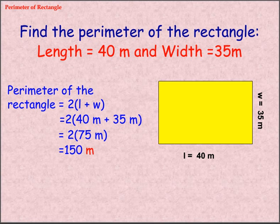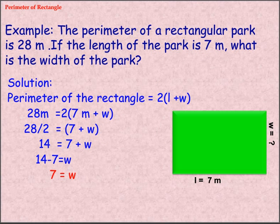Find Perimeter of Rectangle. The perimeter equals 75 meters, so the total perimeter is 150 meters.